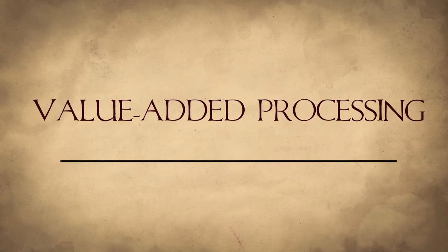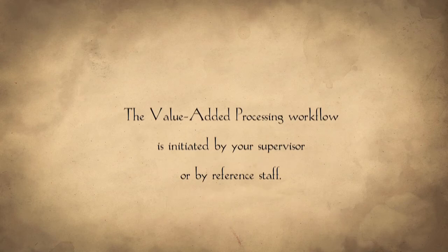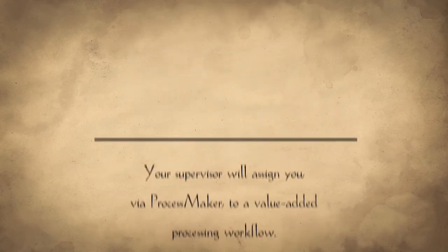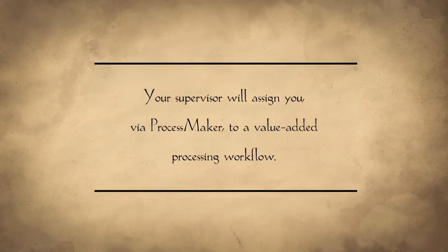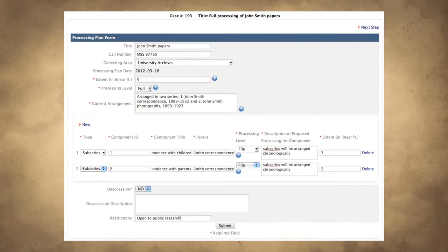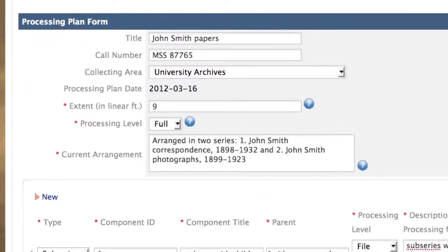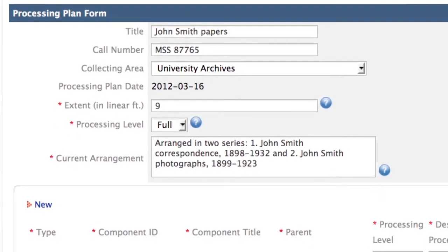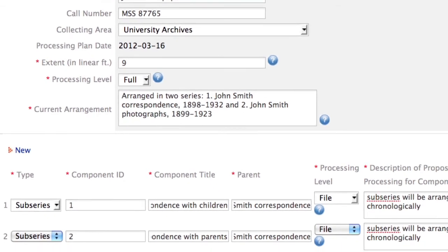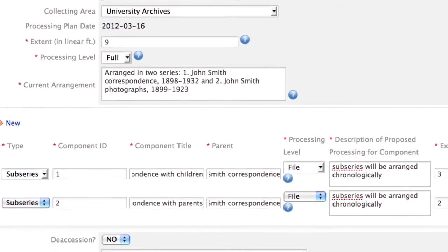The next workflow we will examine is Value Added Processing. The Value Added Processing workflow is initiated by your supervisor or by reference staff. Your supervisor will assign you, via ProcessMaker, to a Value Added Processing workflow. The first form that you will complete is the Processing Plan form. Your completed Processing Plan will be reviewed by your supervisor, and once they approve the plan, it will guide your arrangement activities.